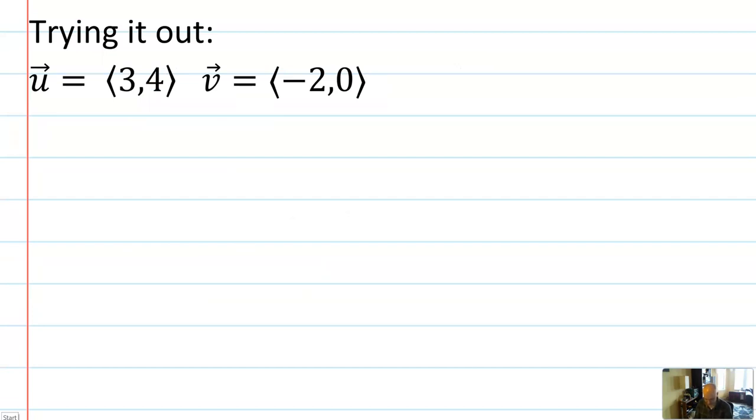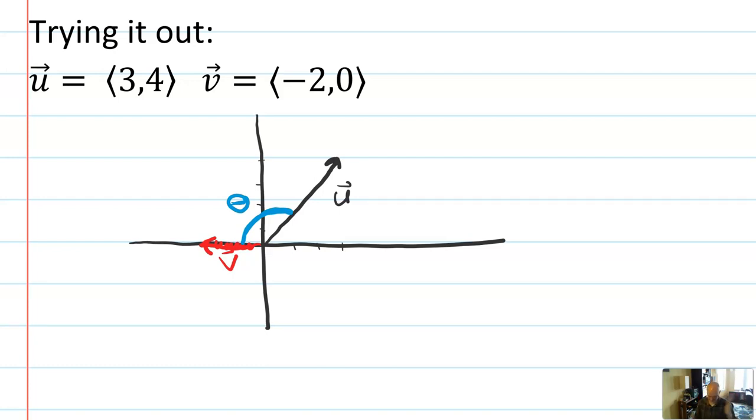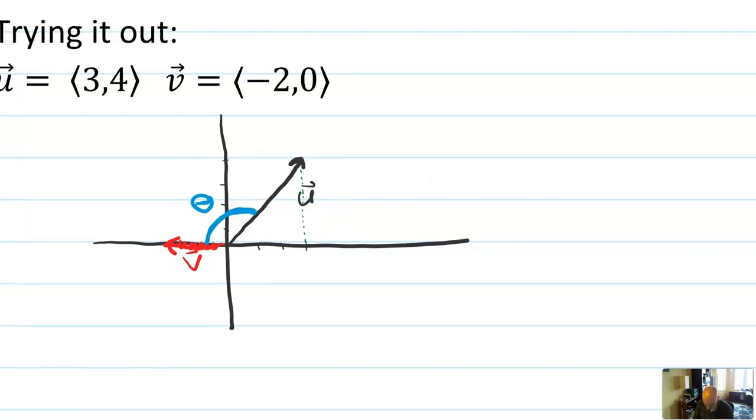So let's test out the formula. Say I have these two vectors here, u is 3, 4, and v is negative 2, 0. First thing I would do is take a second and draw them out. You don't really need to draw them out, but I think it's helpful. And then the angle between them that we're going to find is the angle that's kind of the acute angle right here. And I can tell from the picture that this angle is going to be bigger than 90. I chose an example probably because you don't need a formula for doing this. You could probably find the angle inside here and then do some other work and just use normal geometry. But I want to see what the formula says.